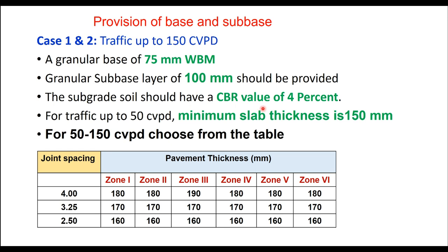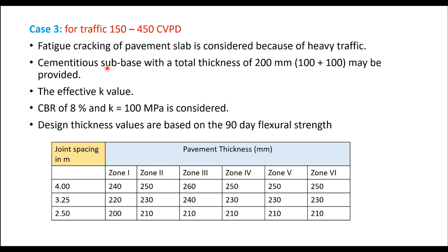For traffic up to 50 CVPD (Case 1), minimum thickness is 150 mm. For Case 2 (50 to 150 CVPD), minimum pavement thickness is chosen from the code table, as temperature stresses are also counted and thickness depends upon the temperature zone of the area. For Case 3, fatigue cracking is considered and a thicker pavement section is needed. A cementitious subbase in two layers of 100 mm each is suggested, with a minimum CBR of 8% or K value of 100 MPa per meter, and minimum design thickness is taken from the corresponding table.